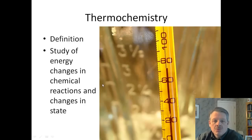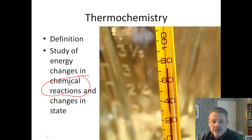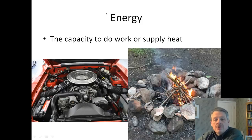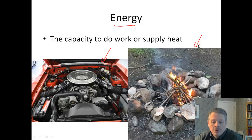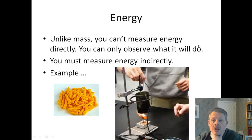In this podcast, we're going to talk about changes from chemical reactions. We're studying heat chemistry and chemical reactions. If we look at what energy is, the definition of energy is the capacity to do work — a car engine — or to supply heat — a wood fire. Those are examples of energy. But unlike mass, you can't measure energy directly; I can't go and put it on a scale. You can only observe energy by what it will do, so you can measure energy indirectly.